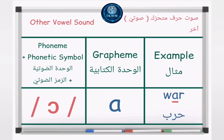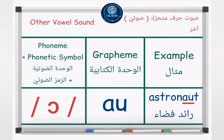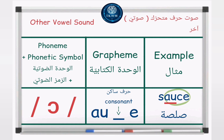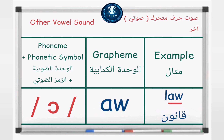Other vowel sound. Phoneme plus phonetic symbol: /ɔː/. Grapheme — letter A, example: 'war' /ɔː/. Grapheme — letters AU, example: 'sauce' /ɔː/. Grapheme — letters AW, example: 'law' /ɔː/.